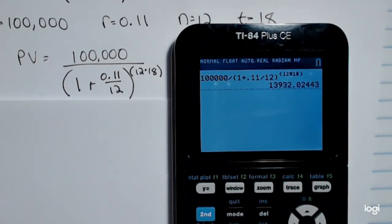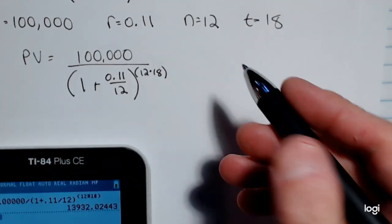So the amount you need to deposit initially is $13,932.02, rounding to the nearest cent.